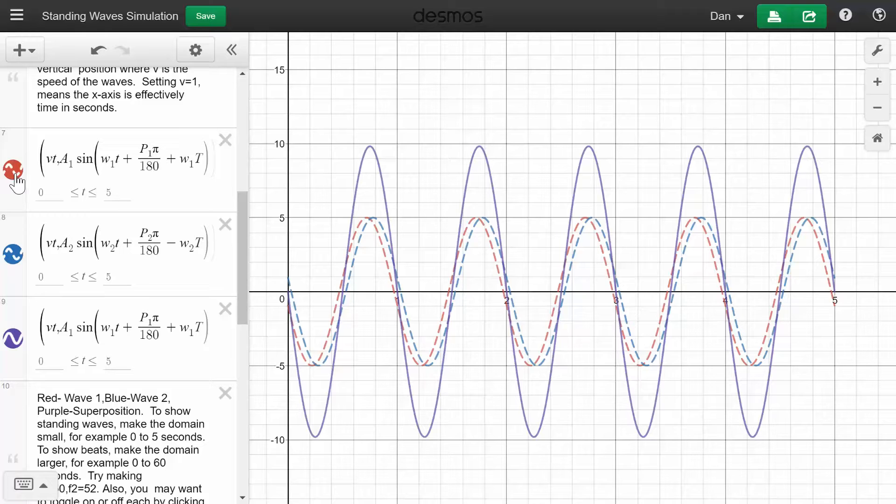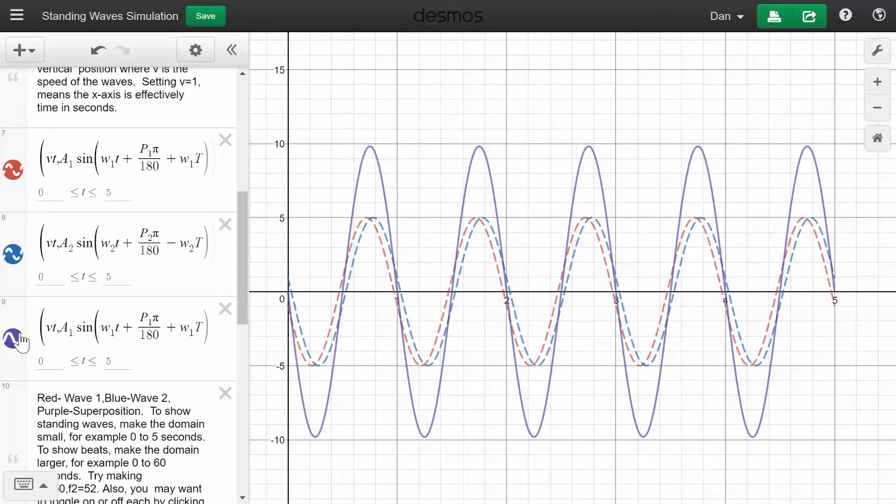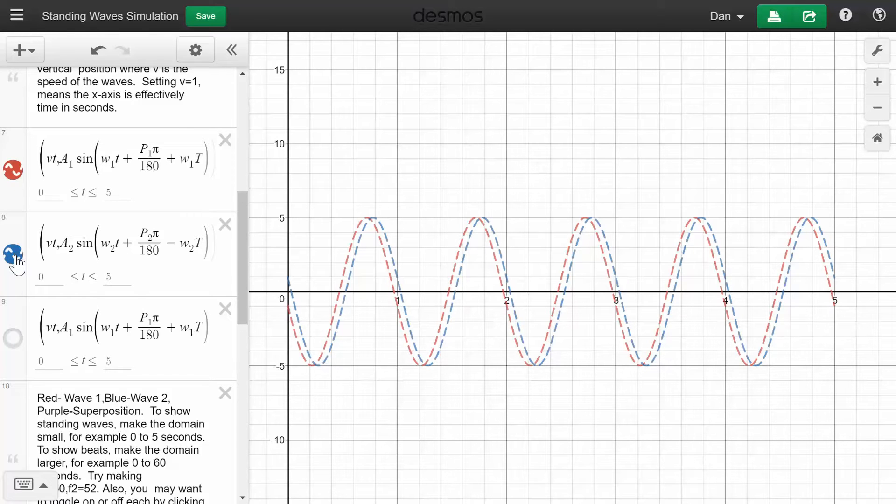Now we can turn these on and off. I can toggle off the red and the blue, and then you're left with just the superposition. Or I can toggle off the superposition or one or the other. You get the idea.